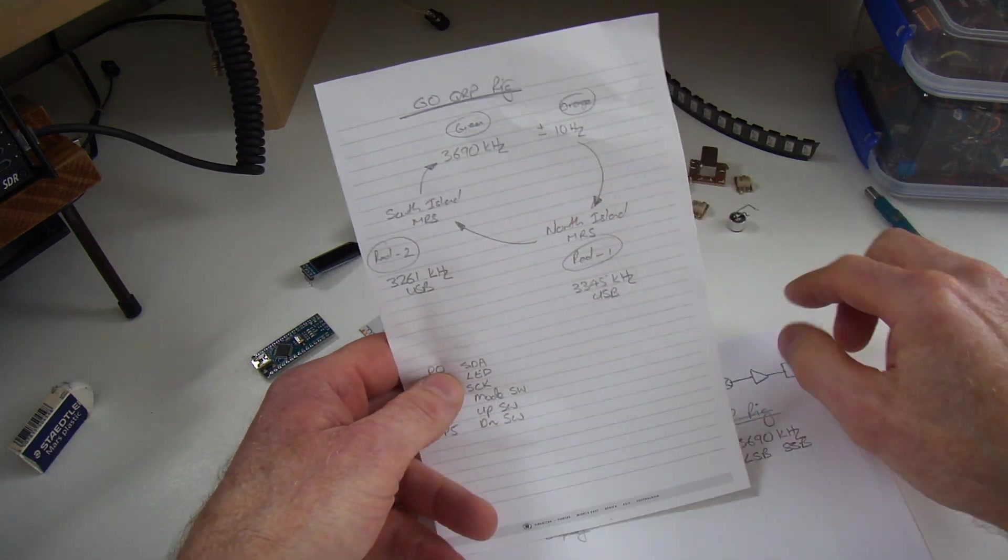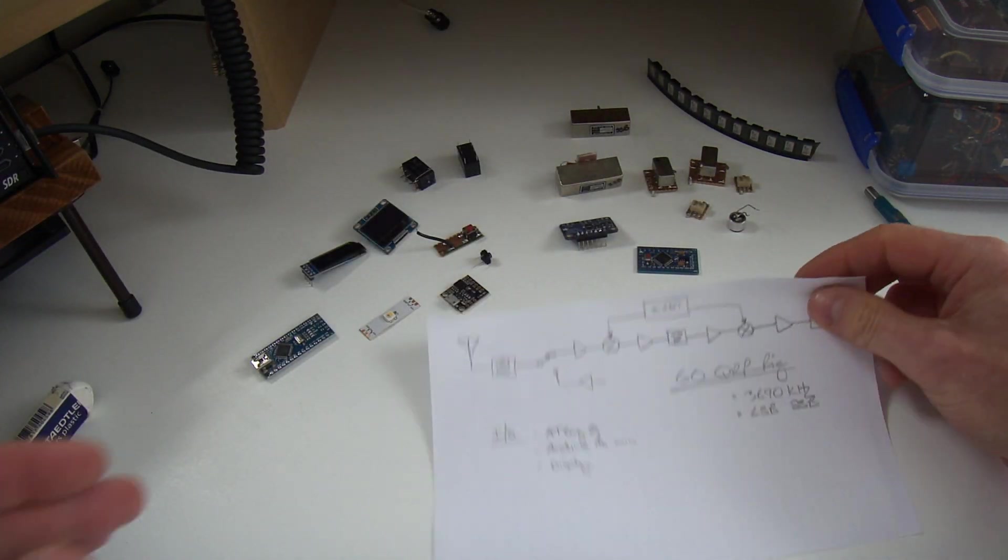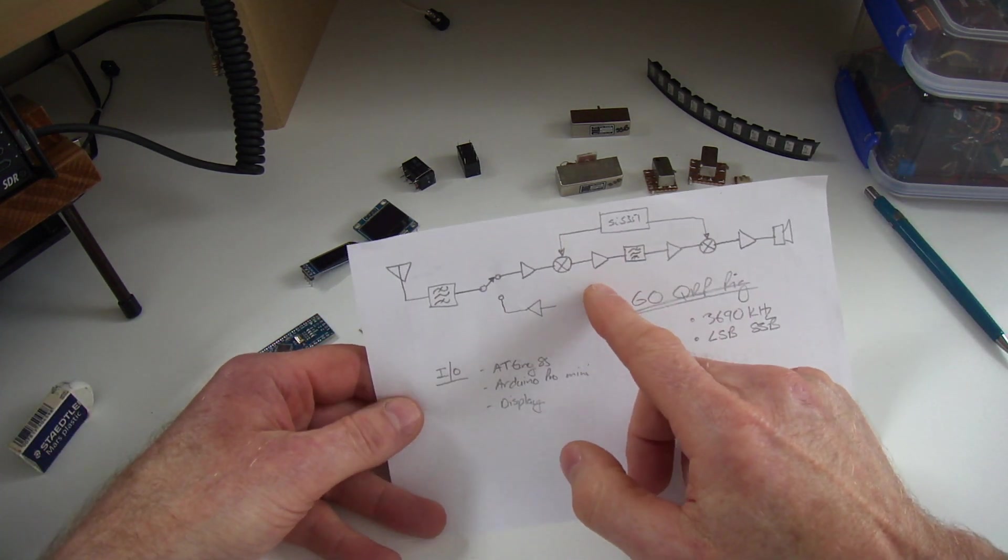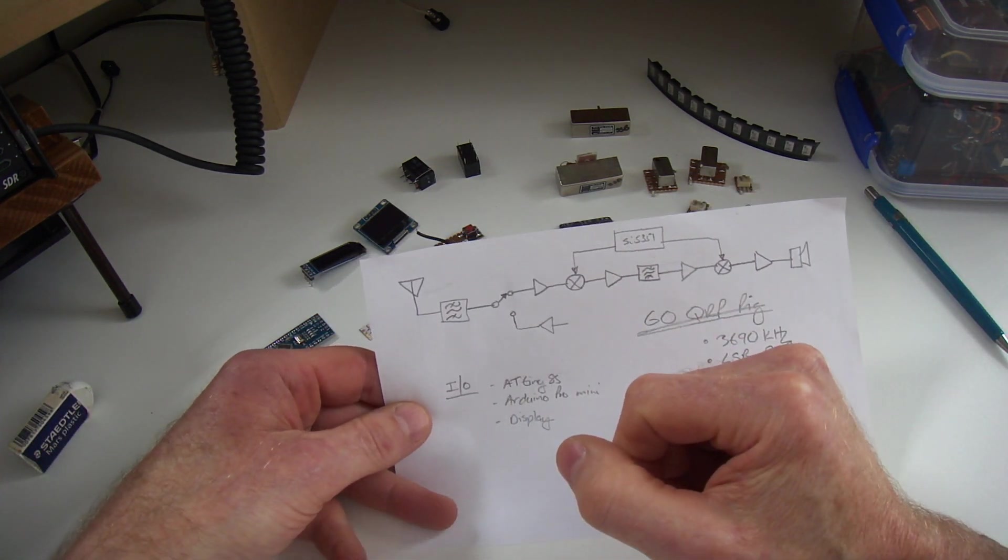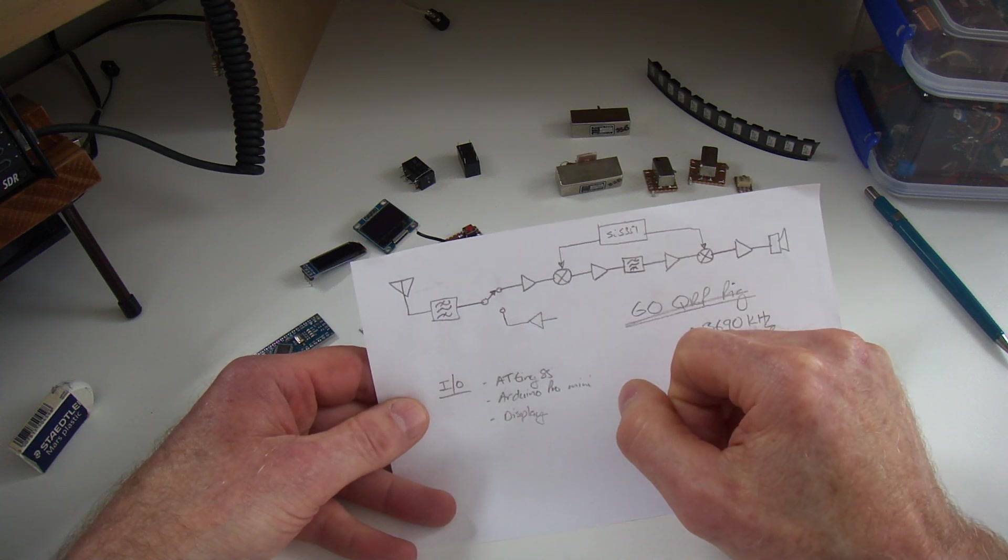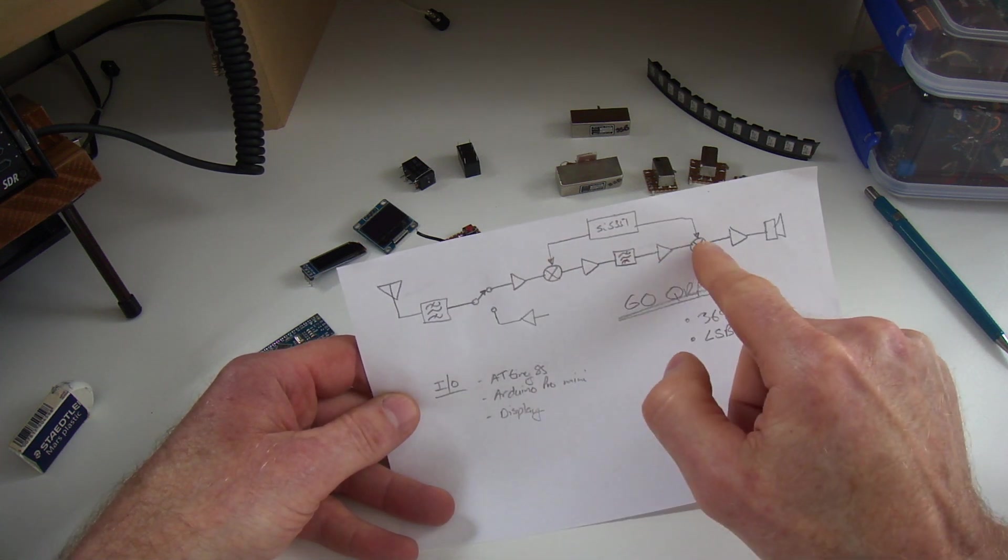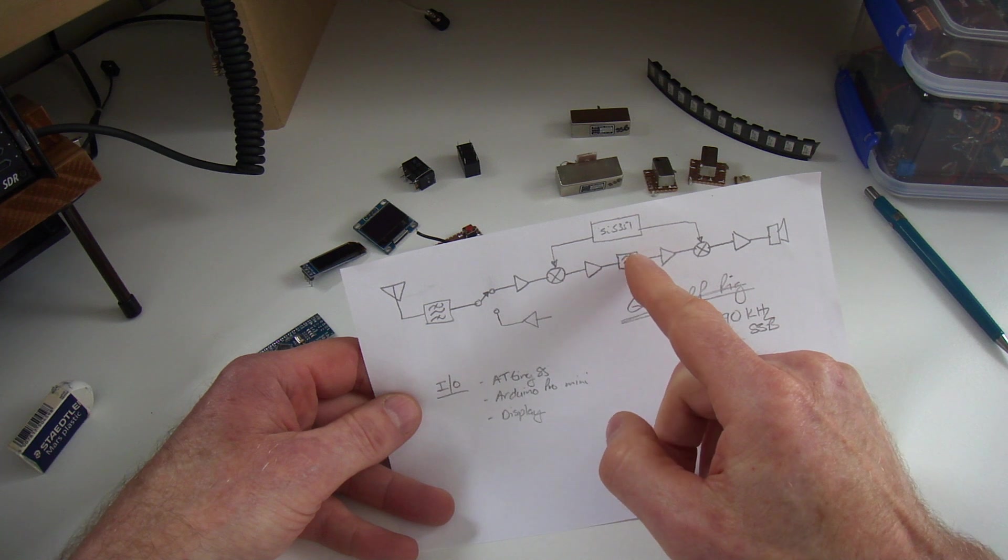From an architecture point of view, I'm going to stick with a single conversion superheterodyne, two mixers there with a single crystal filter.